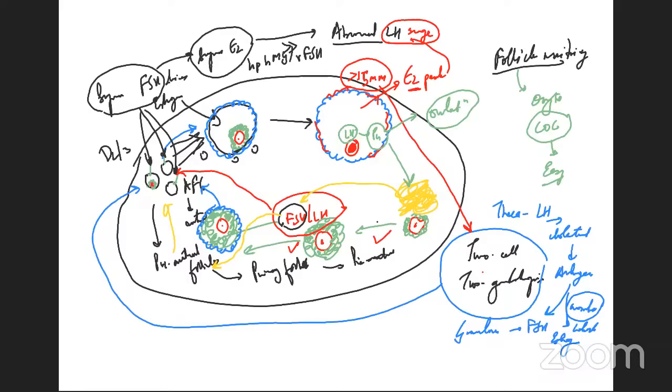When estrogen peaks, granulosa cells start to express LH receptors. These LH receptors help in progesterone formation, which ultimately causes ovulation, followed by corpus luteum formation. All these form the absolute basis of gynecology for any ovarian stimulation. When we look at the live videos, you will clearly understand what we are trying to see — both videos are just two minutes each and will give you a crystal-clear idea.